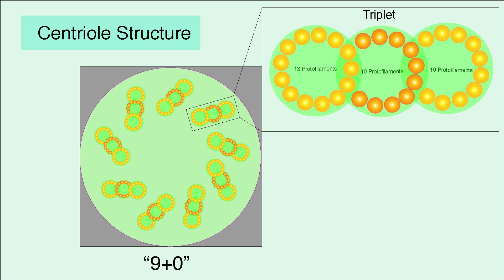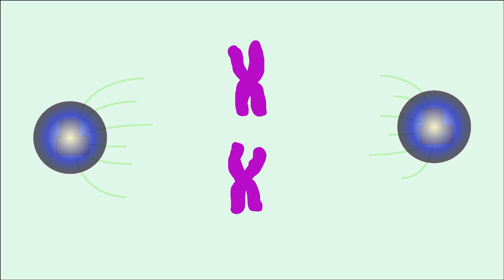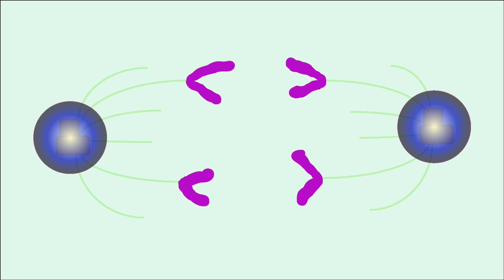The 9 plus 0 arrangement creates a single centriole, and there are typically two centrioles in a centrosome. During cell division, the centrosome organizes spindle fiber assembly. The microtubules of spindle fibers must lengthen to bind chromosomes and then shorten to pull the two chromatids apart.